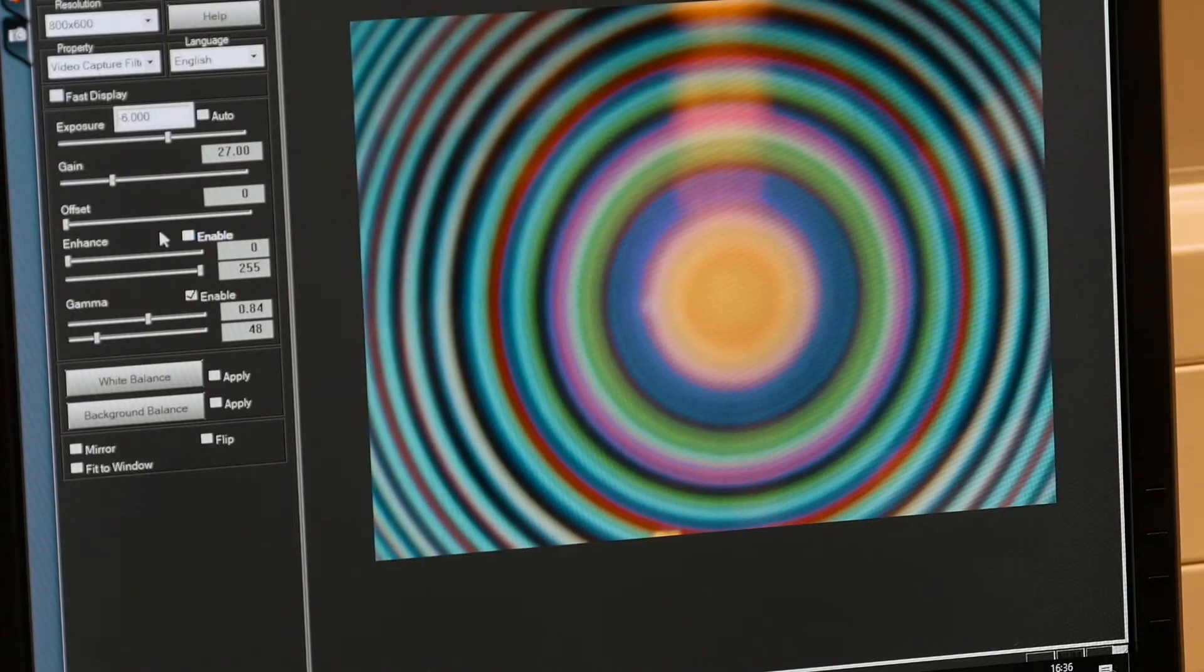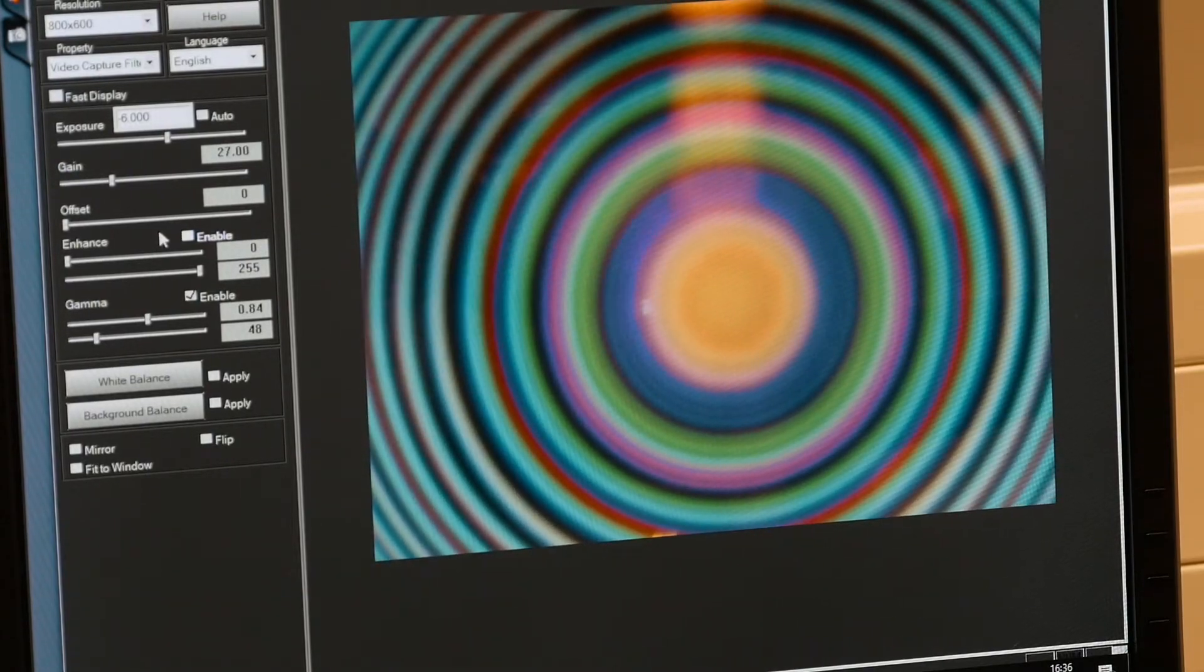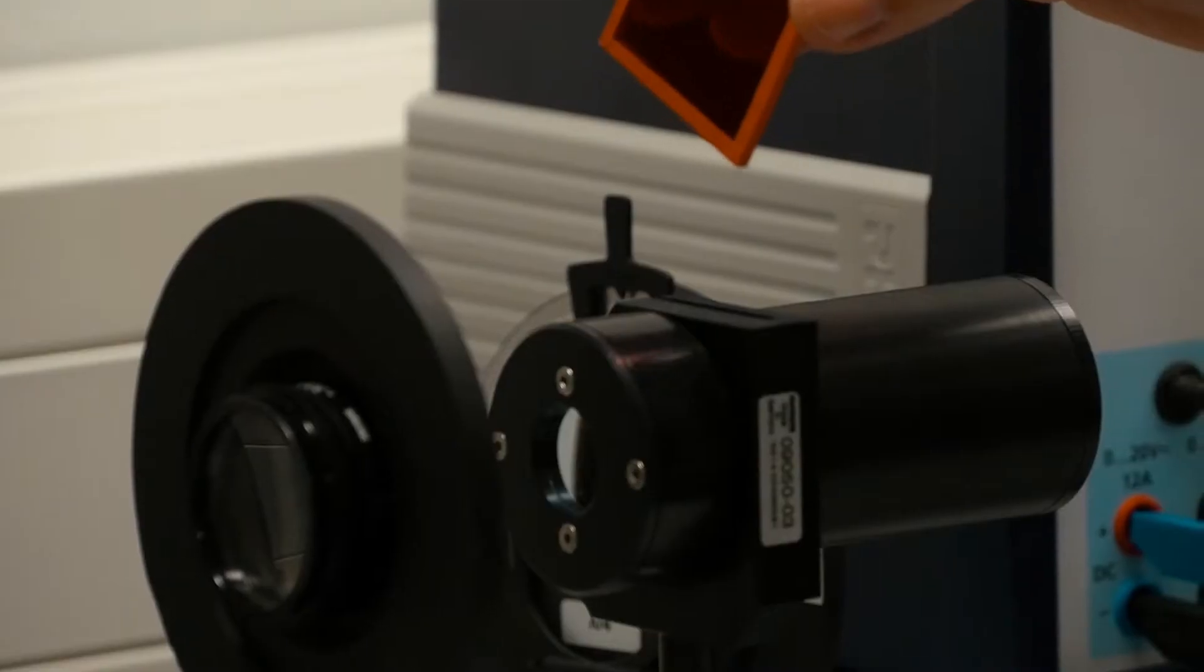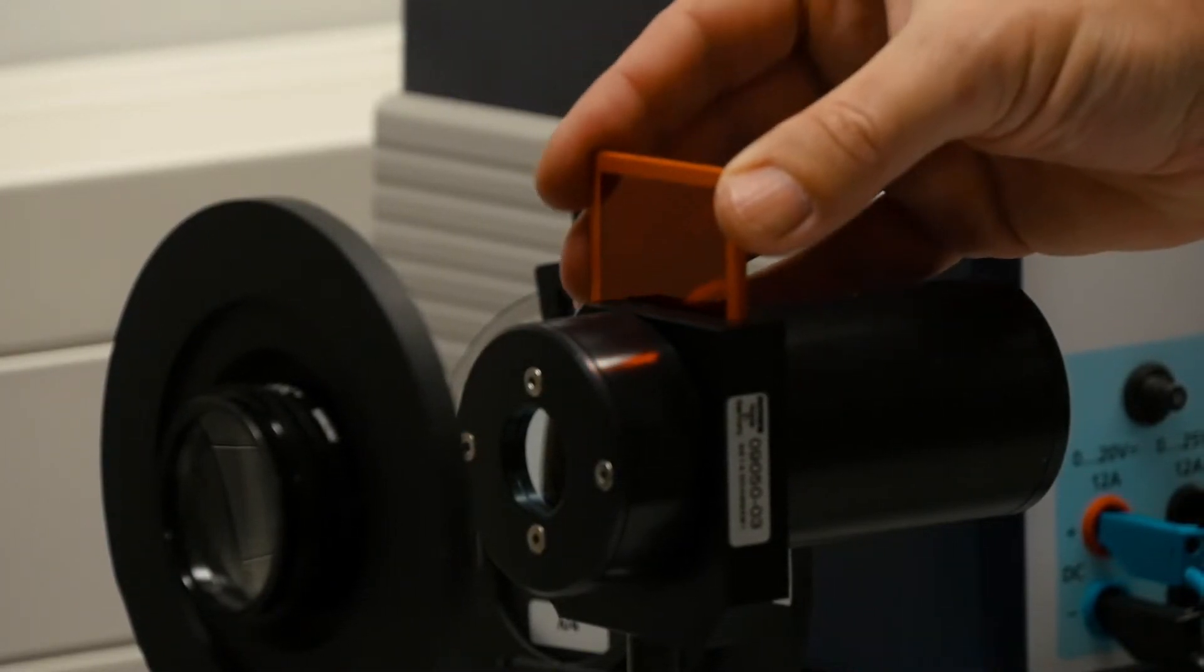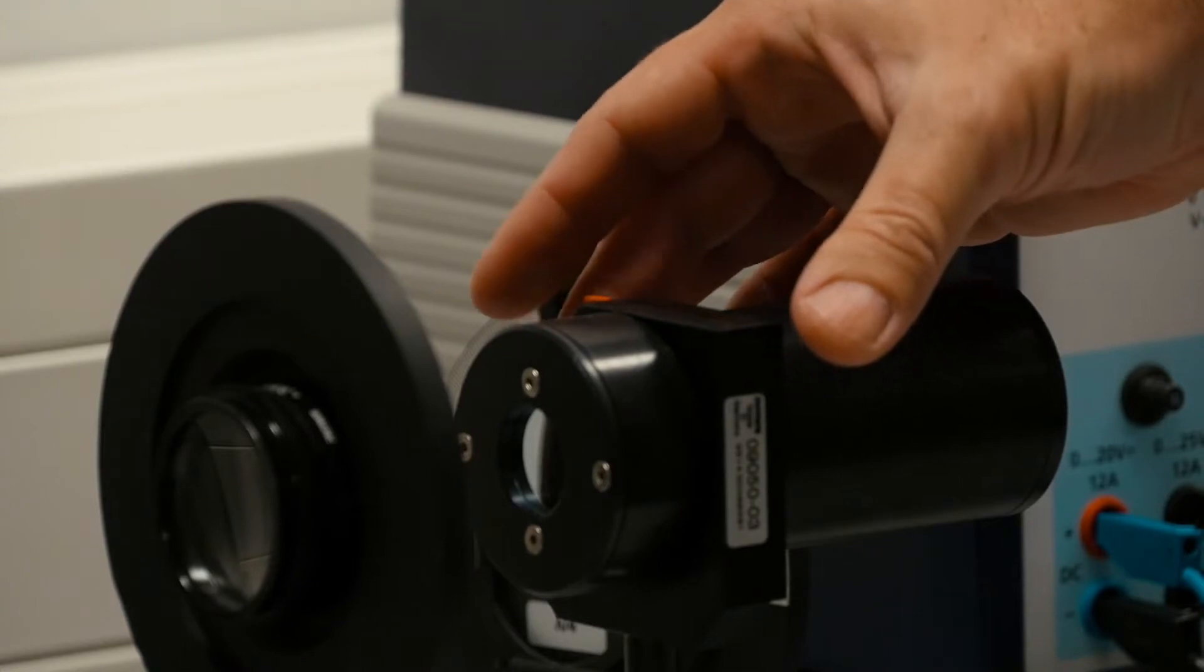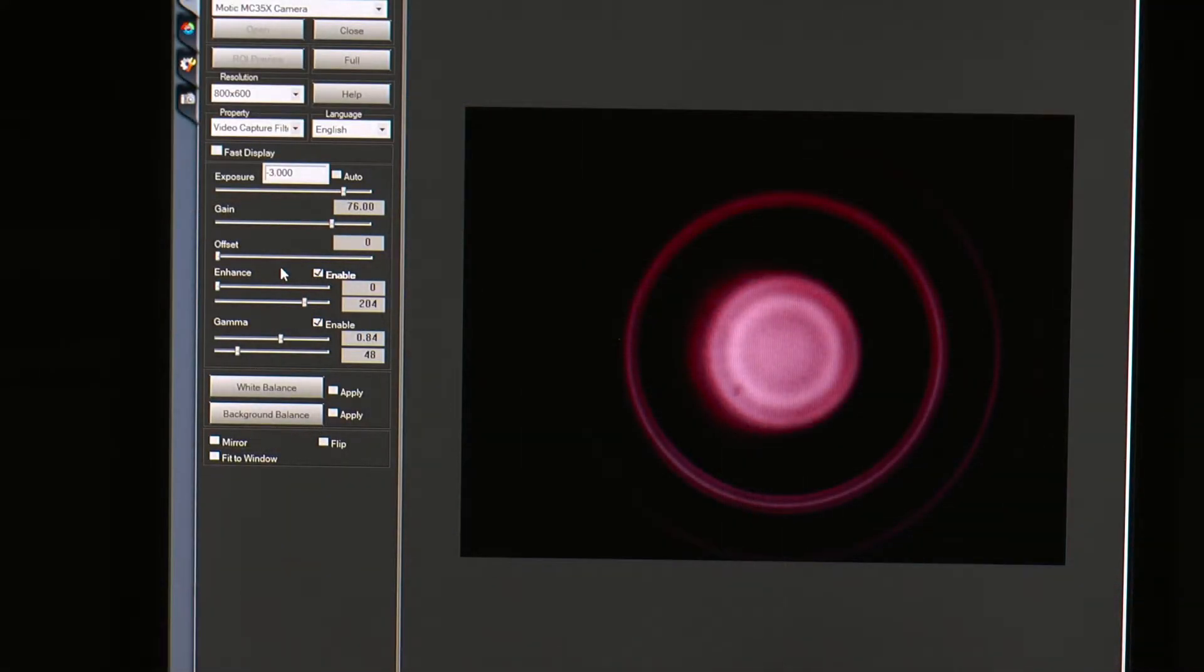Measurement of the normal Zeeman effect in the transverse direction. Remove both the polarizing filter and the interference filter from the beam path and insert the red filter. Capture the interference rings for at least 5 different values for the current supplied to the coil.